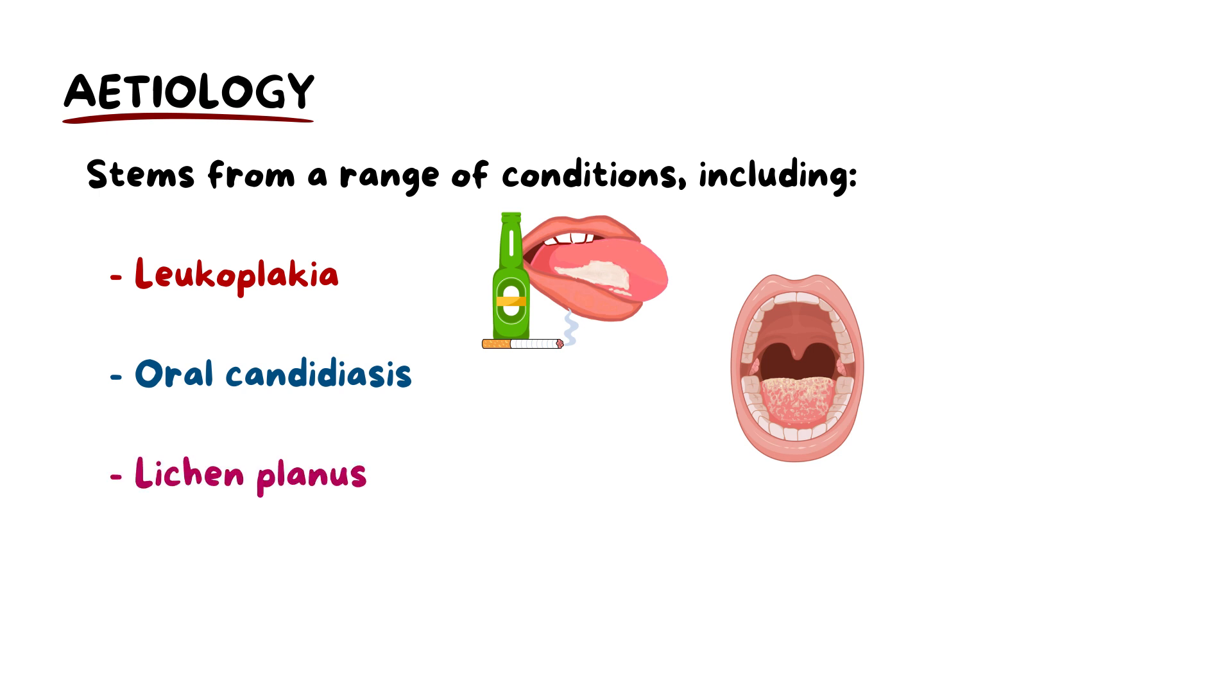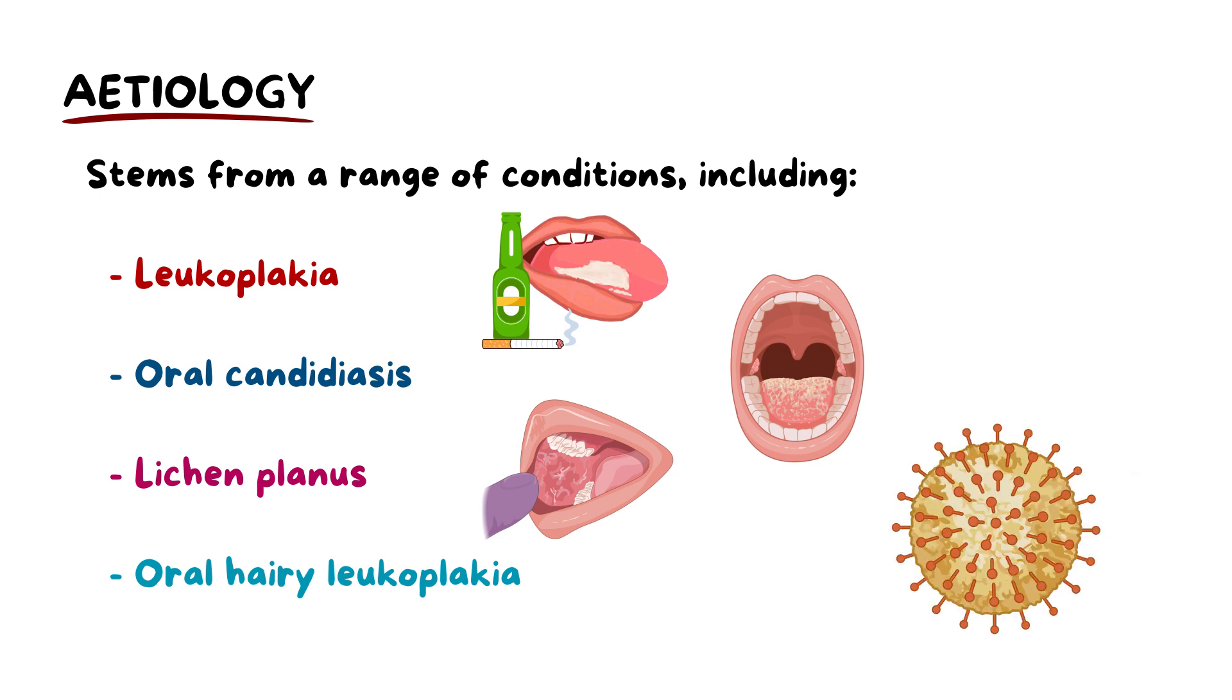There is also lichen planus, which is an autoimmune disorder, and oral hairy leukoplakia, which occurs from an infection from the Epstein-Barr virus.